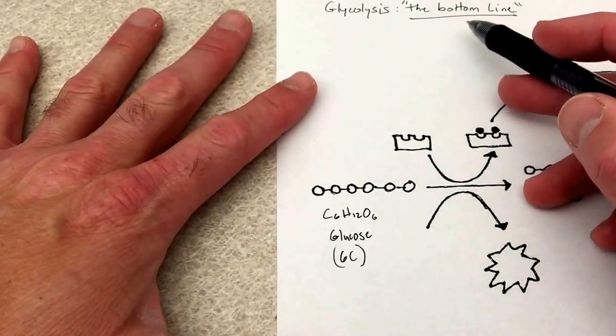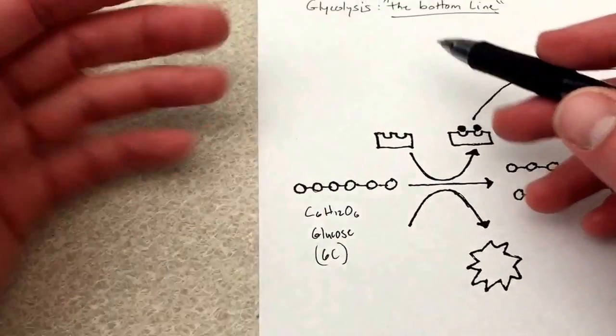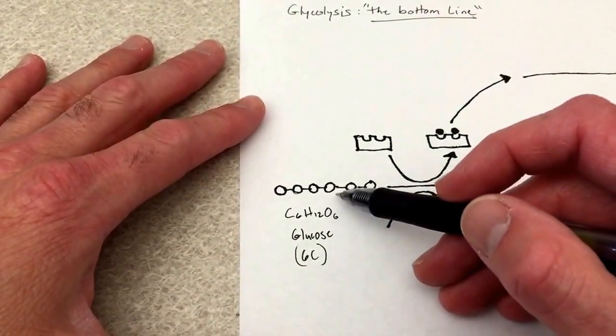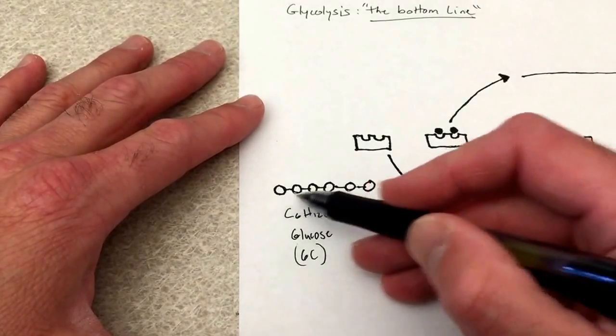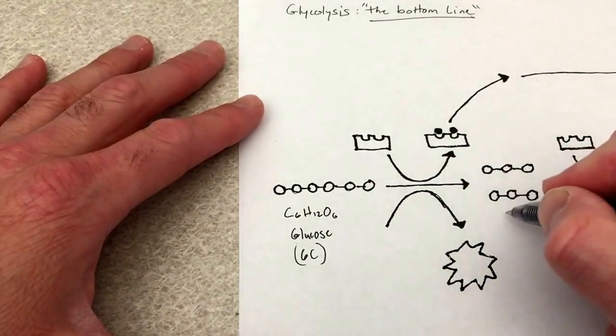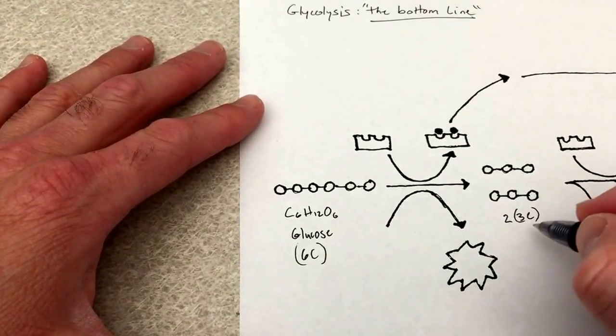So the bottom line of glycolysis, remember this is many, many, many steps, but the bottom line is that by the end of glycolysis, a multi-step pathway, this six-carbon molecule gets broken down into two, three-carbon molecules of pyruvate.